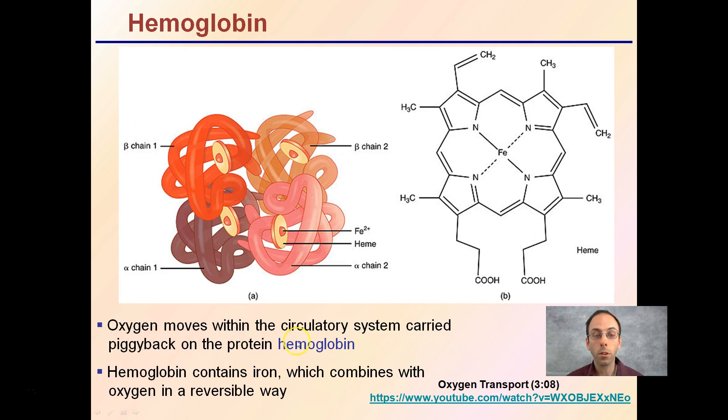Oxygen moves within the circulatory system piggybacked on the protein called hemoglobin. Because it's a protein, its shape is very important. Hemoglobin contains iron, which combines with oxygen in a reversible way. It's a good thing it's reversible because we want oxygen to bind and also be released. We also want hemoglobin to transport our carbon dioxide.